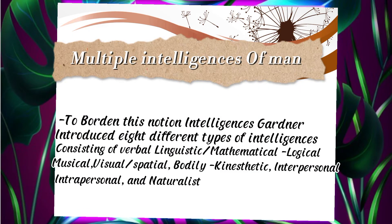Multiple intelligences of man. To broaden this notion of intelligence, Gardner introduced eight different types of intelligences, consisting of verbal linguistic, mathematical logical, musical, visual spatial, bodily kinesthetic, interpersonal, intrapersonal, and naturalist.